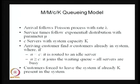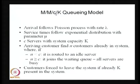The arrival follows the Poisson process, service is exponential, and we have C identical servers. The capacity is capital K. Whenever the system size is less than C, a customer will be routed to an idle server. If it is greater than or equal to C, all servers are busy and the customer has to wait.